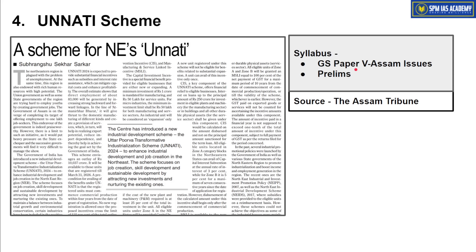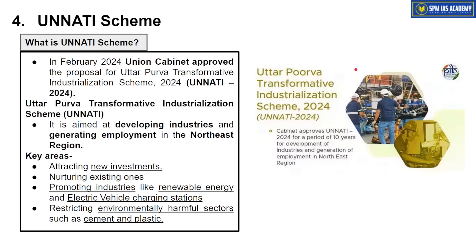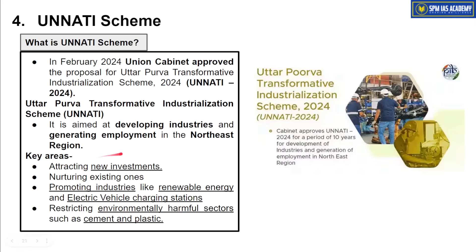The next topic is the ANITI scheme, important from GS Paper 3 point of view, and a direct question can be asked in APSC Mains. The ANITI scheme — 'Uttar Purvo Transformative Industrialisation Scheme' — was brought by the Union Cabinet in February or March of this year. Its aim is to bring industrial development to the North Eastern region. Its four main areas are: promoting new investments in the North East, nurturing existing industries, promoting new sectors like renewable energy and electric vehicle charging stations, and restricting environmentally harmful sectors like cement and plastic.